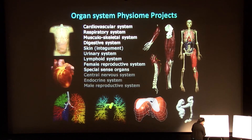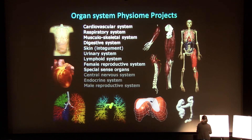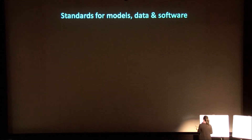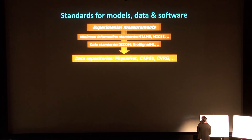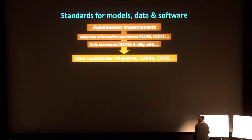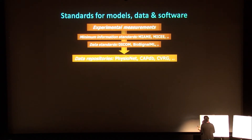There are now Physiome projects across all 12 organ systems in the body, and all of them are multiscale in some sense. The approach has been, from experimental measurements, to define minimum information standards, where experimentalists get together and define what information needs to be recorded for a particular type of experiment — such as electrophysiology — and that needs to be done by experimentalists in conjunction with modellers.